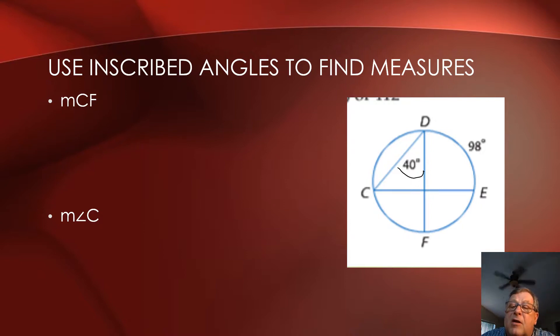And then I see a second inscribed angle at least. Well, I see more than that actually. But another one is here at angle C. Angle C is an inscribed angle with its sides being CD and CE or DC and EC are its sides. And they're both cords of the circle.